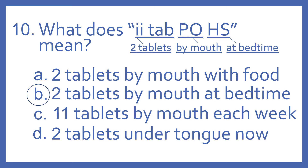And the answer is B. Two tablets by mouth at bedtime. The II is the Roman numeral for two. Tab is the abbreviation for tablets. PO means by mouth and HS means at bedtime.